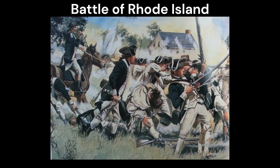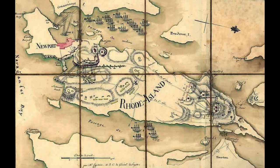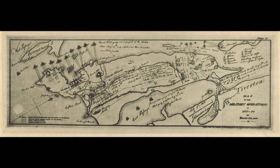The Battle of Rhode Island, also known as the Battle of Newport, was a military engagement fought on August 29, 1778, during the American Revolution. The battle was fought between the American Continental Army, led by General John Sullivan, and a combined British and Hessian force, led by General Sir Robert Pigott. The battle took place in the vicinity of Newport, Rhode Island, and was an attempt by the American forces to retake the strategic port city from the British.